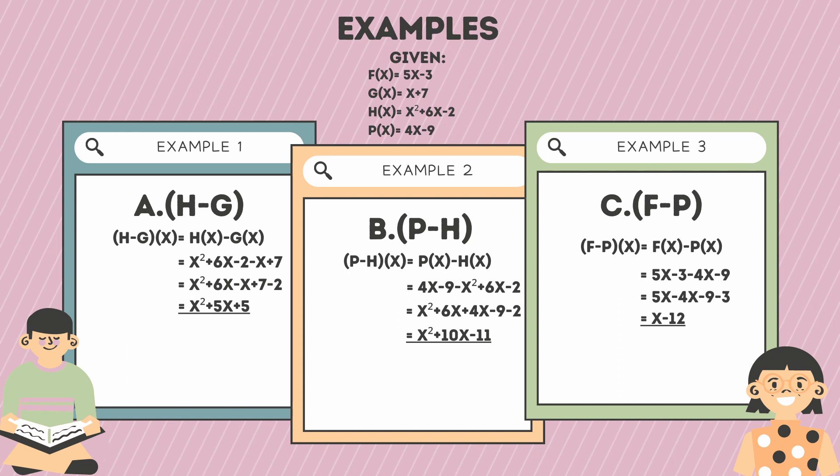Example 2b: (p − h)(x) = p(x) − h(x) = 4x − (x² + 6x − 2) = x² + 6x + 4x − 9 − 2 = x² + 10x − 11.